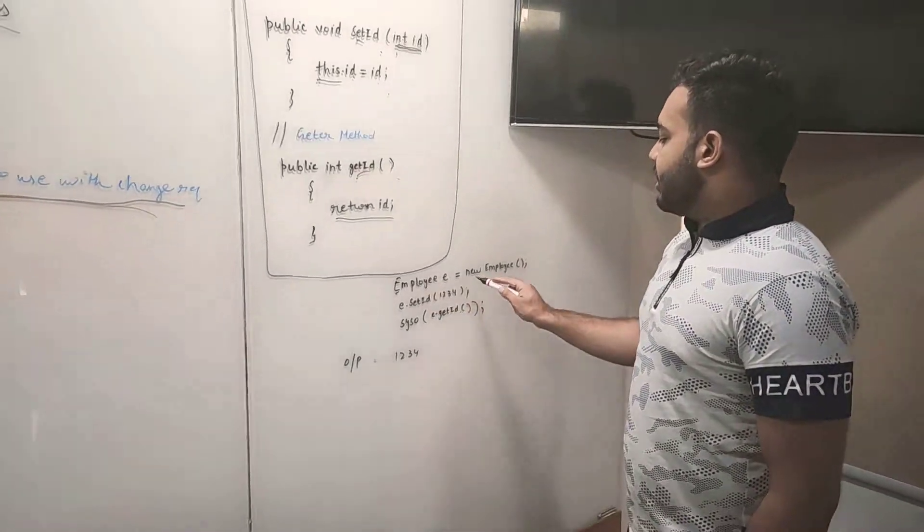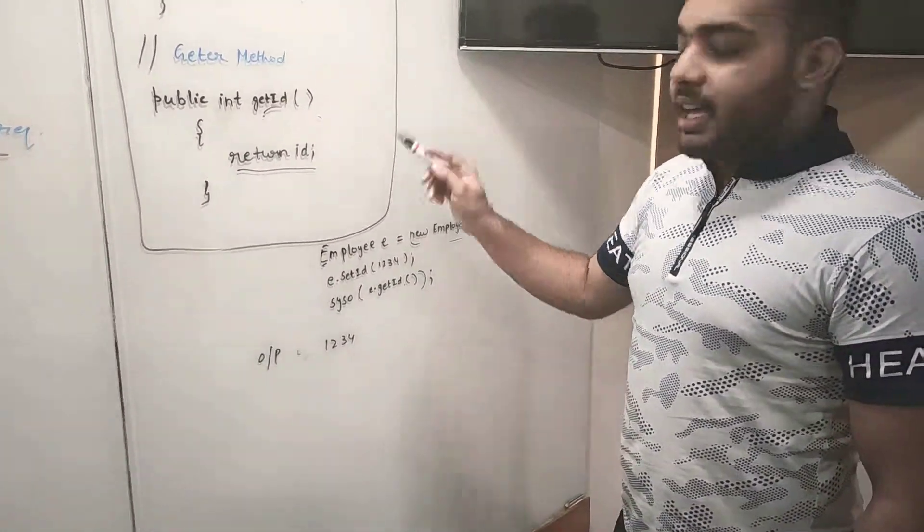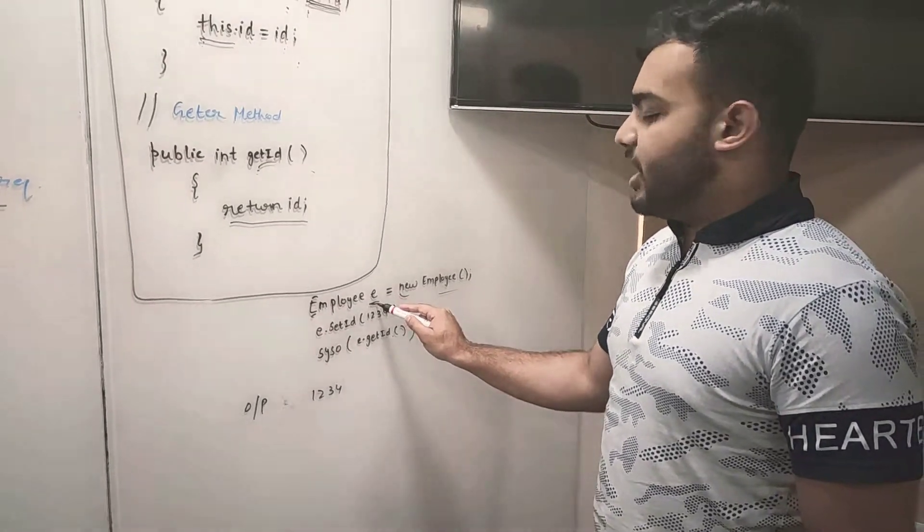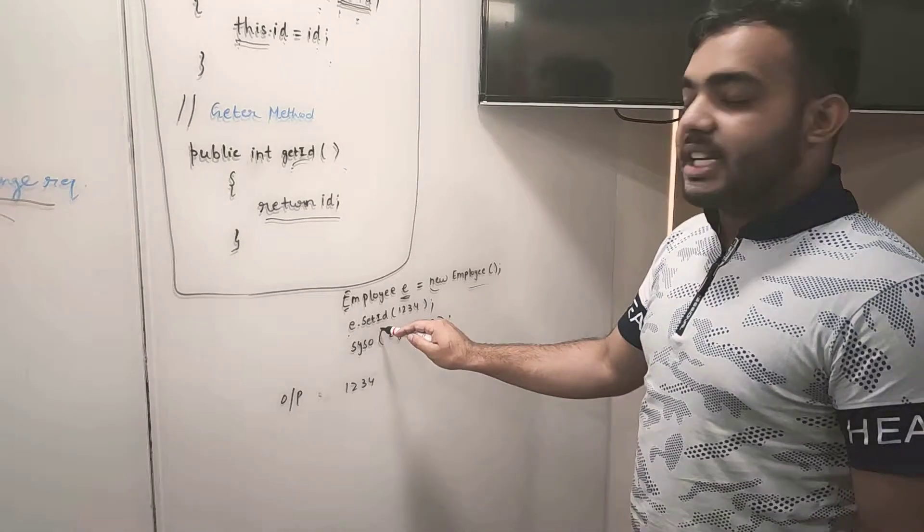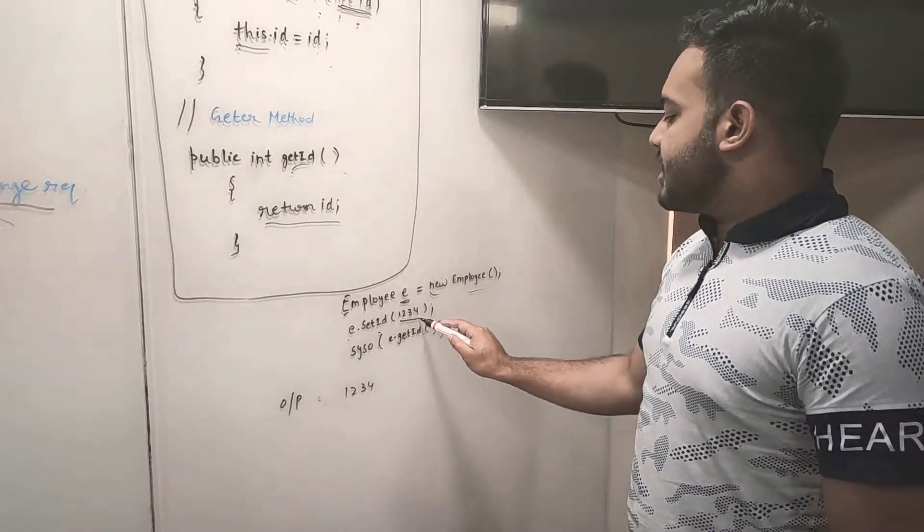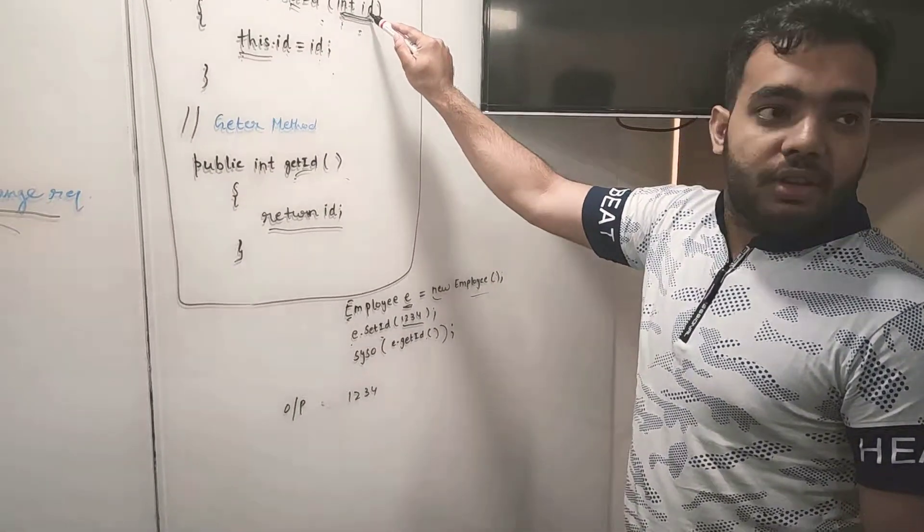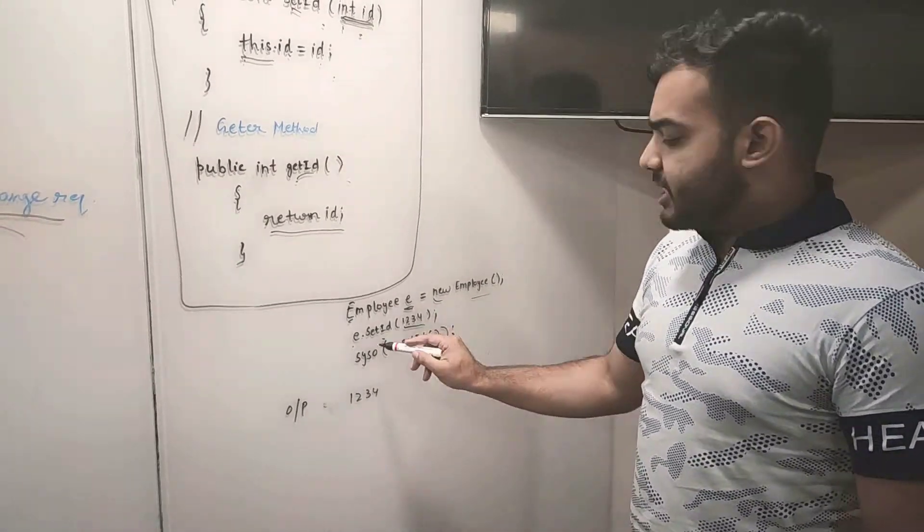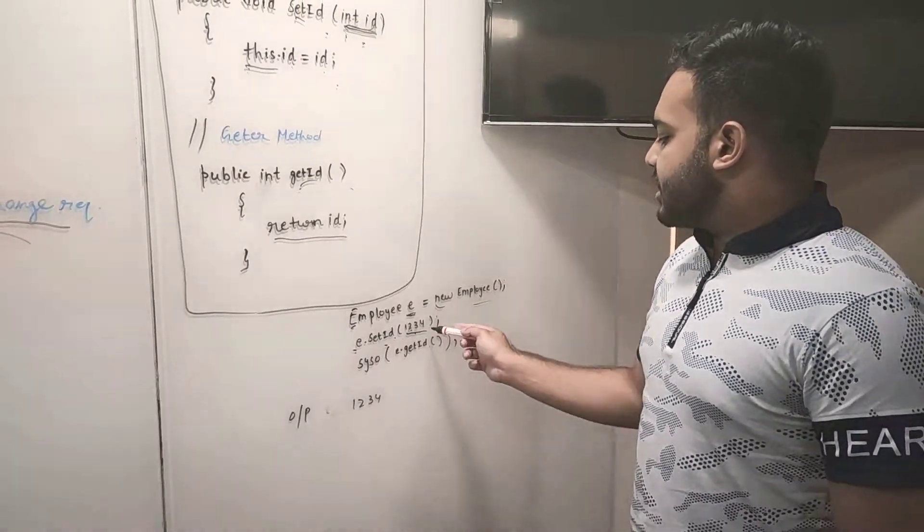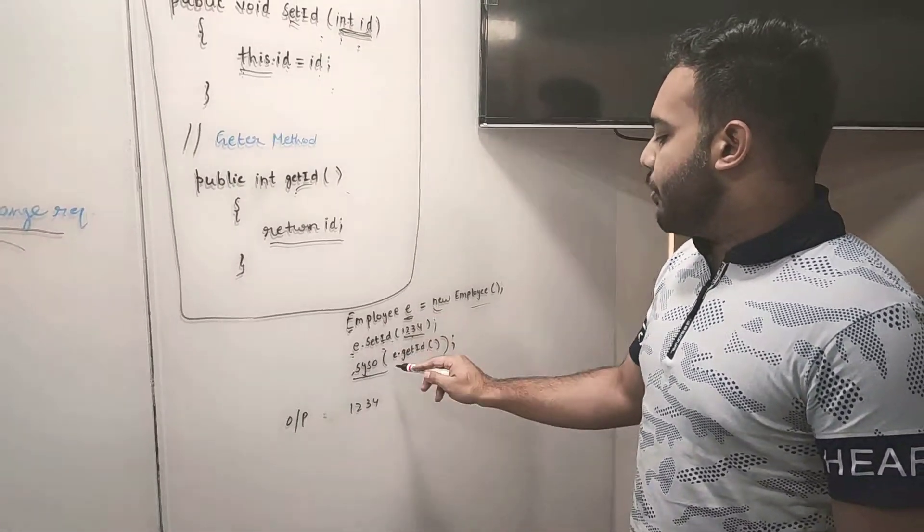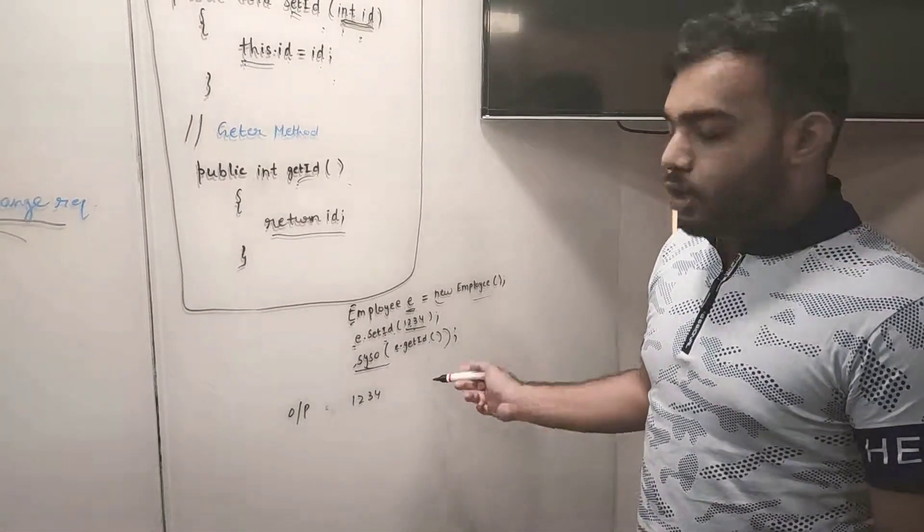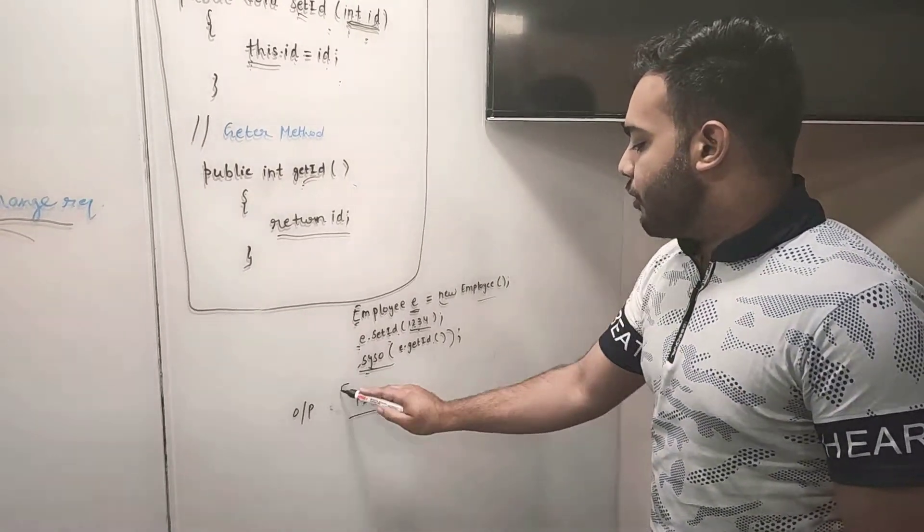In the main method, we have defined an object Employee and given a variable e. We can access the set id by using e.setId and we have initialized the integer parameter value. After setting the id, we have printed the value by using the getID option. We will get output 1, 2, 3, 4.